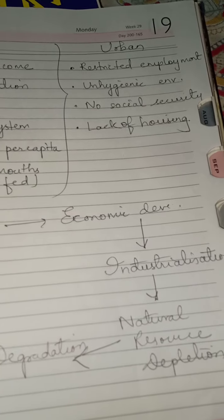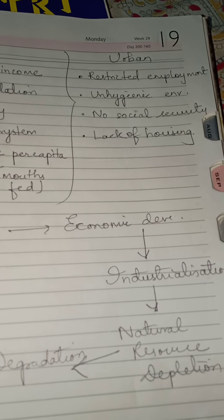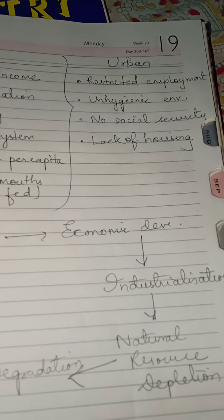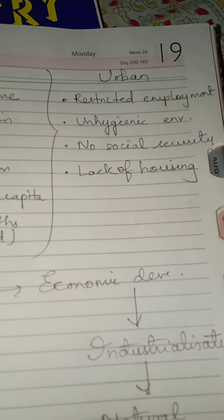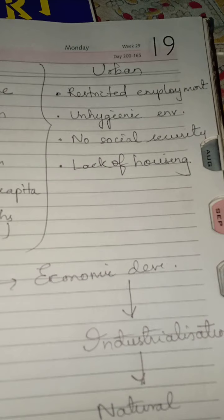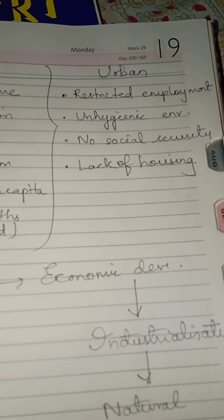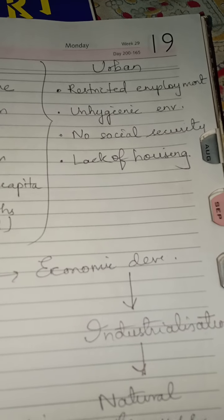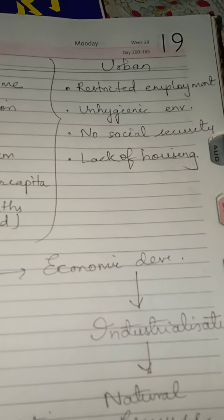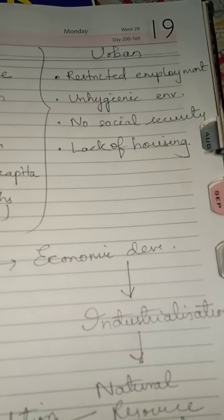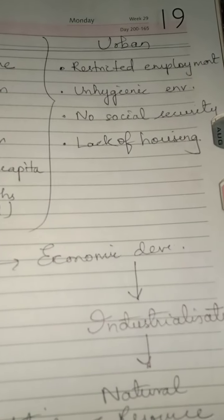Coming to urban poverty: there is restricted employment, with lakhs of engineers and professionals graduating each year but not getting jobs according to their qualifications. There is also an unhygienic environment with no proper drainage or sanitation, no social security schemes, and lack of housing facilities for people living in urban societies.